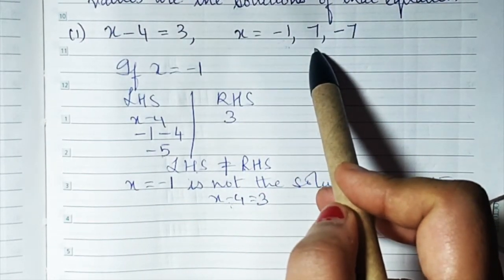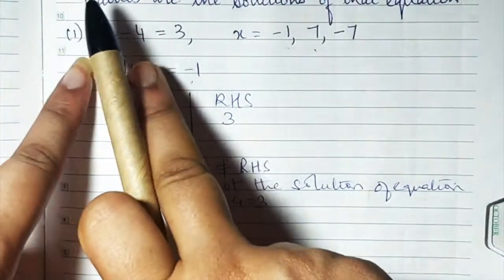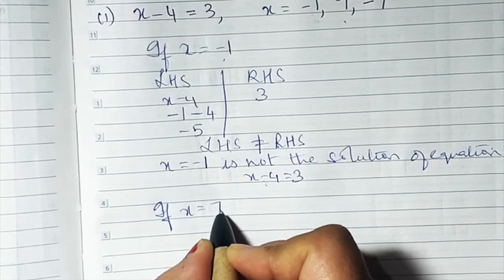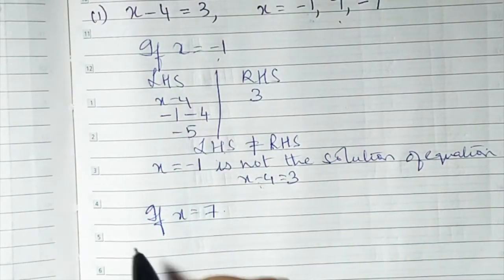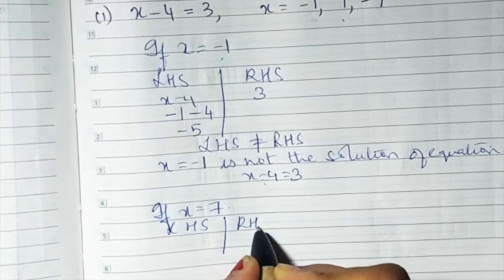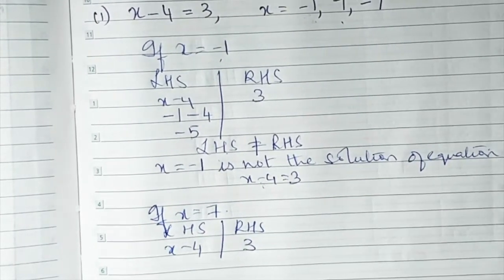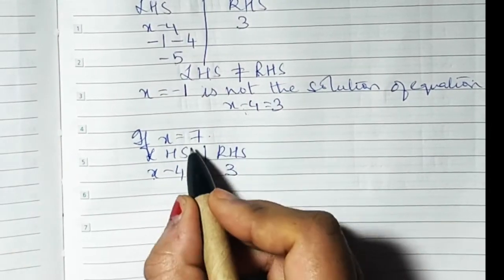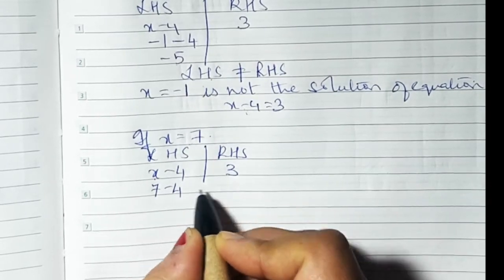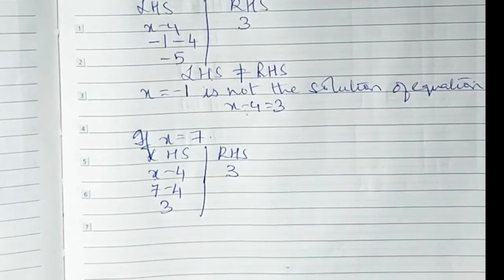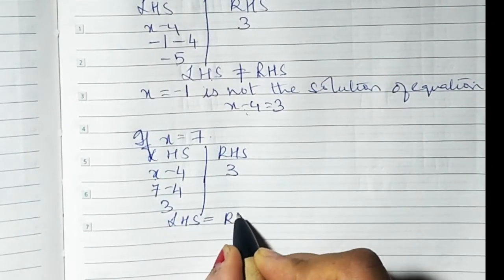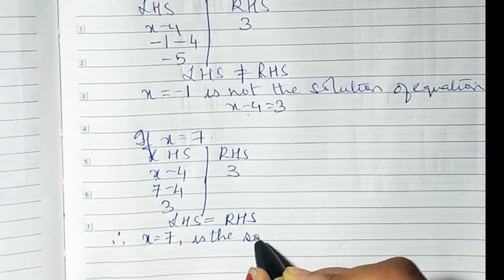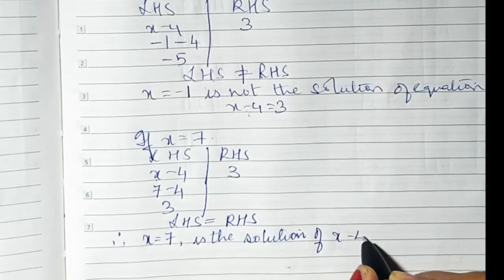The second value is x = 7. Again, LHS is x minus 4 and RHS is 3. Instead of x, put 7: 7 minus 4 equals 3. LHS equals 3 and RHS equals 3, so LHS is equal to RHS. Therefore, x = 7 is the solution of x - 4 = 3.